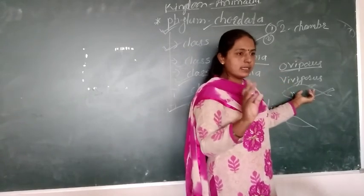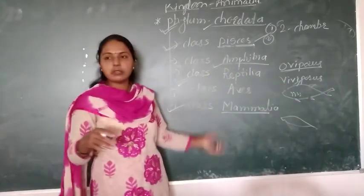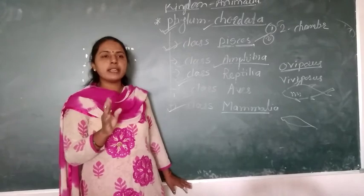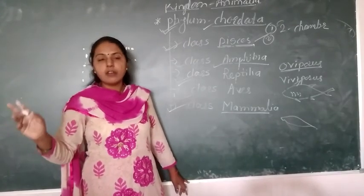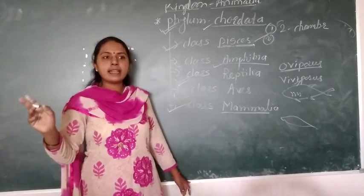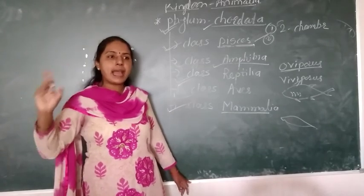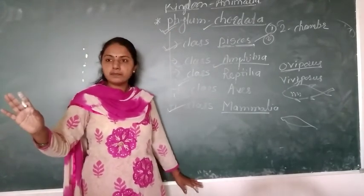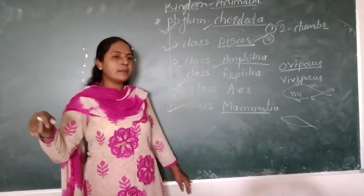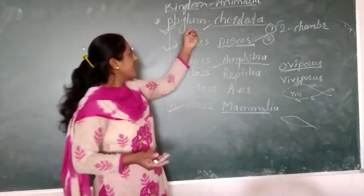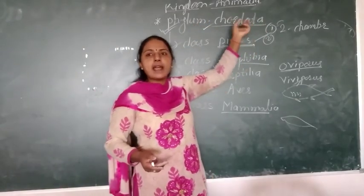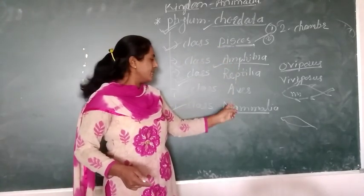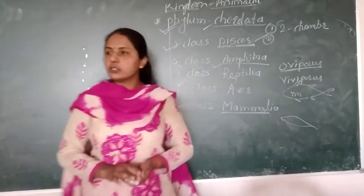In this lesson we studied about the five kingdom classification. Kingdom Animalia has ten phyla. Phylum Porifera to Echinodermata are non-chordates. The last phylum, phylum Chordata, is divided into five classes: Pisces, Amphibia, Reptilia, Aves, and Mammalia. Thank you, everybody.